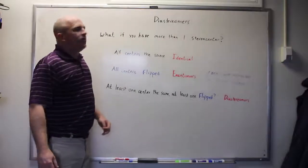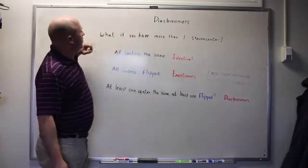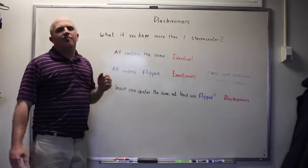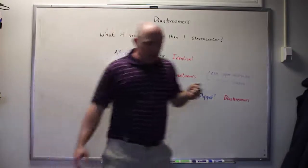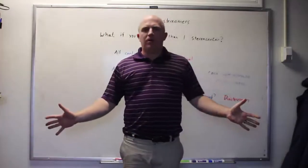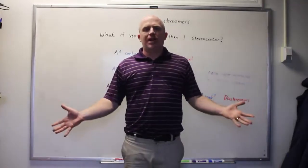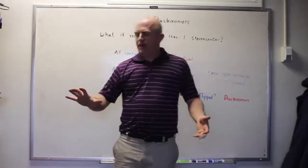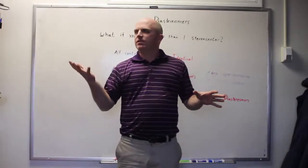I'm going to talk about diastereomers in this lecture, but really what I'm after is what happens if you have more than one stereogenic center in a molecule. We've talked briefly before about how people in general are achiral. That means that we have a plane of symmetry, but I actually have at least four stereogenic centers.